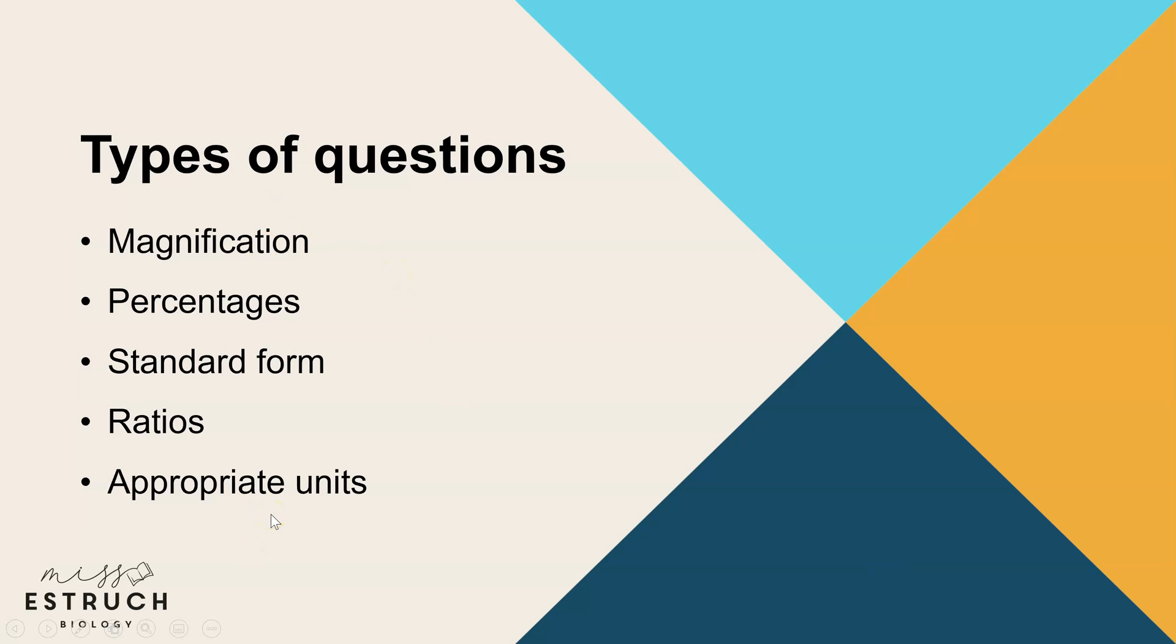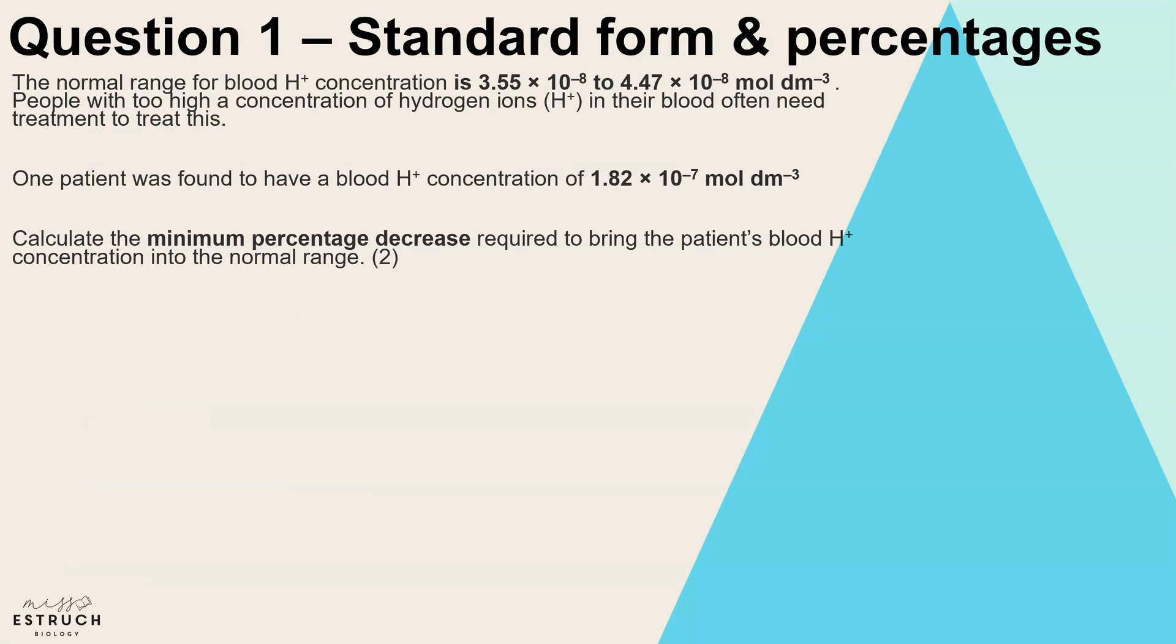Question one covers standard form and percentages. The normal range of blood hydrogen ion concentration is 3.55 times 10 to the minus 8 ranging to 4.47 times 10 to the minus 8 moles per decimeter cubed. People with too high a concentration of hydrogen ions in their blood often need treatment. One patient was found to have a blood hydrogen ion concentration of 1.82 times 10 to the minus 7 moles per decimeter cubed.